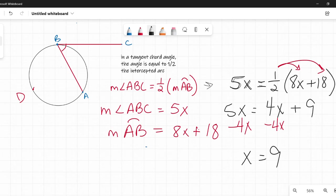So if they're asking you what is X, you have your answer. It's 9. If they're asking you for the measure of angle ABC, plug that 9 back into there. And we would say that it is 45 because 9 times 5 is 45. And then over here, 8X plus 18. If they want to know the measure of arc AB, 9 times 8 is 72. And 72 plus 18 is 90. So the measure of arc AB is 90.